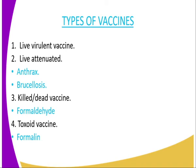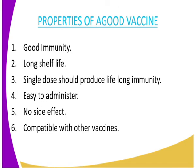The third type is the killed or dead vaccine, where you kill the disease-causing microorganism and mix it with formalin, then introduce it into the body so that the animal is stimulated to produce its own antibodies. Then we have the toxoid vaccine, which is in the form of formalin, and once introduced into the body of the animal, the animal is stimulated to produce its own immunity.